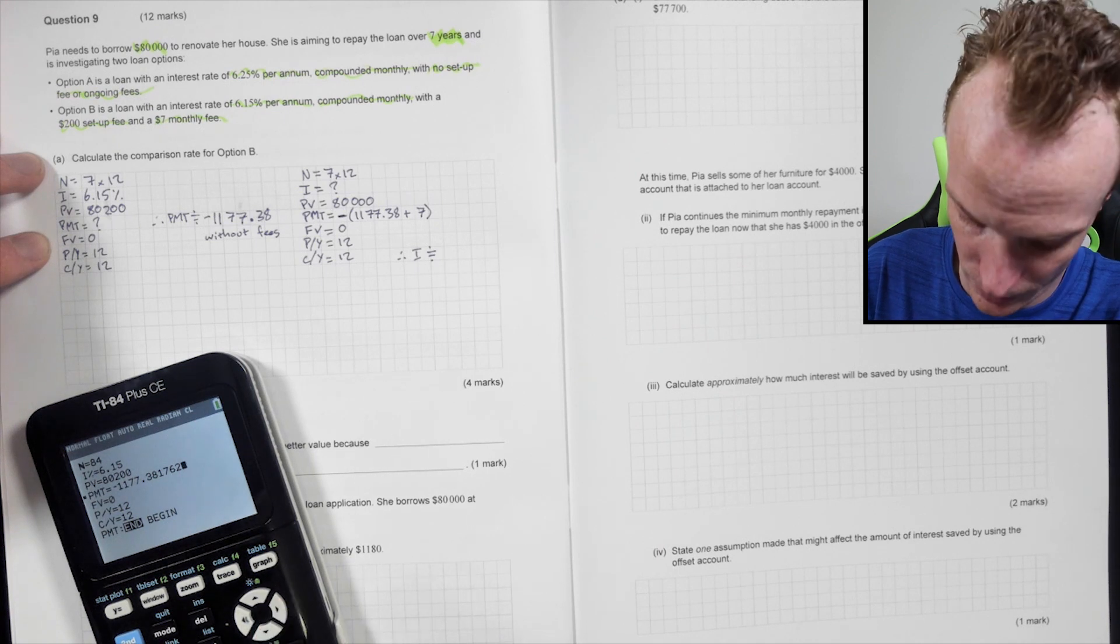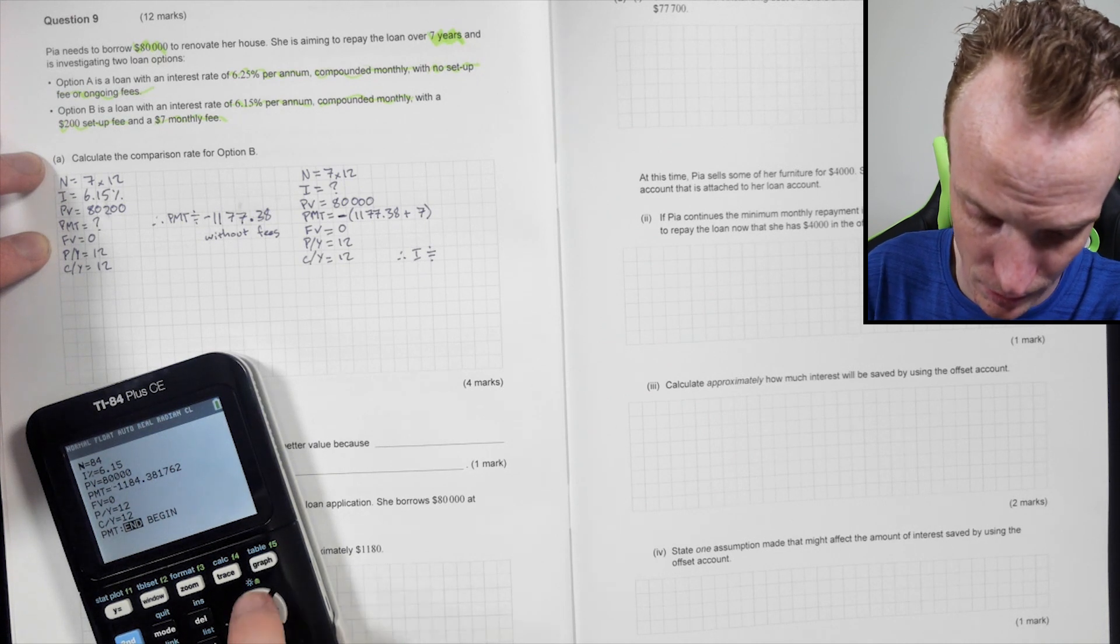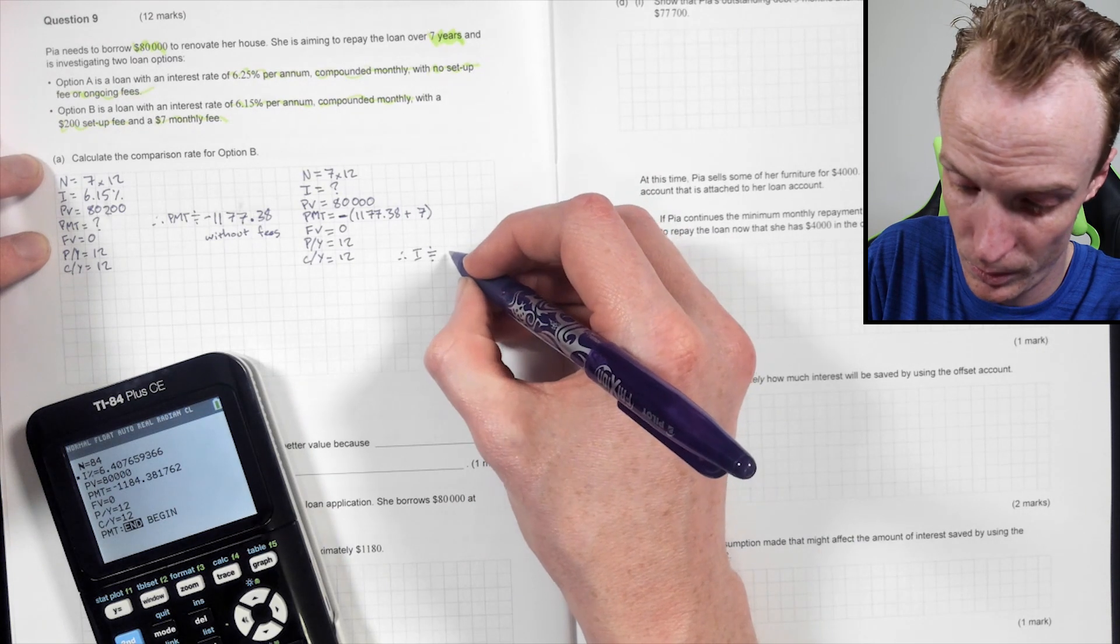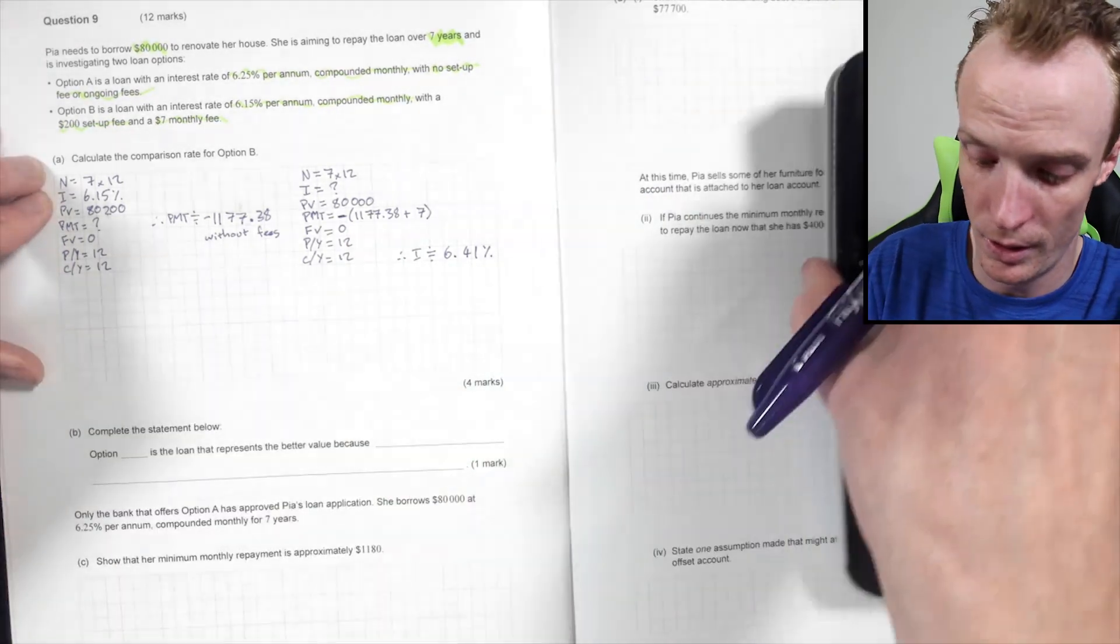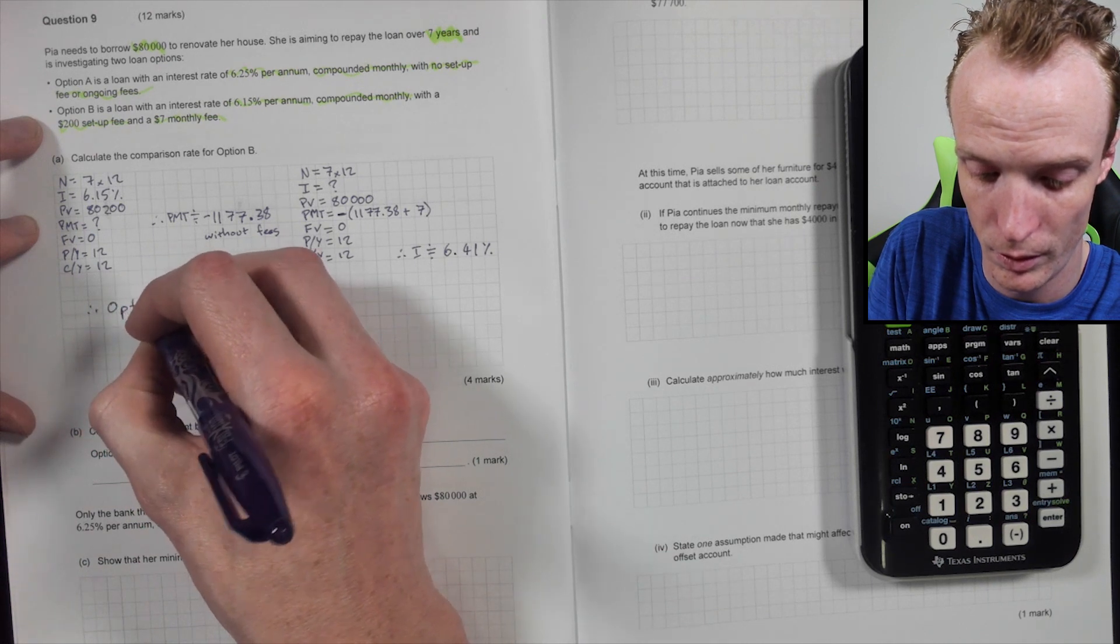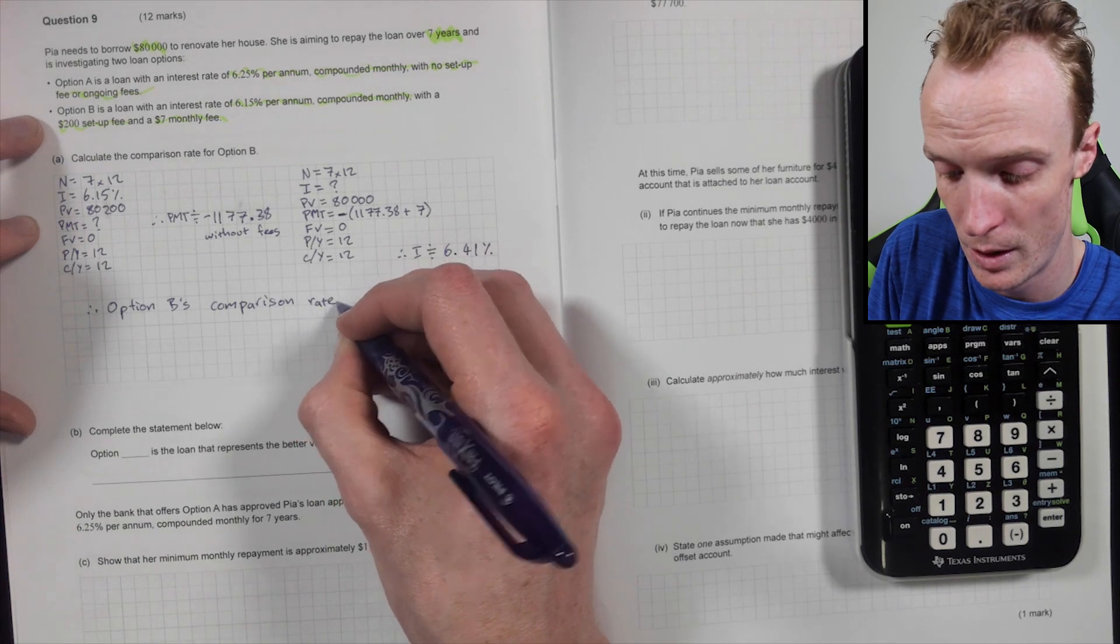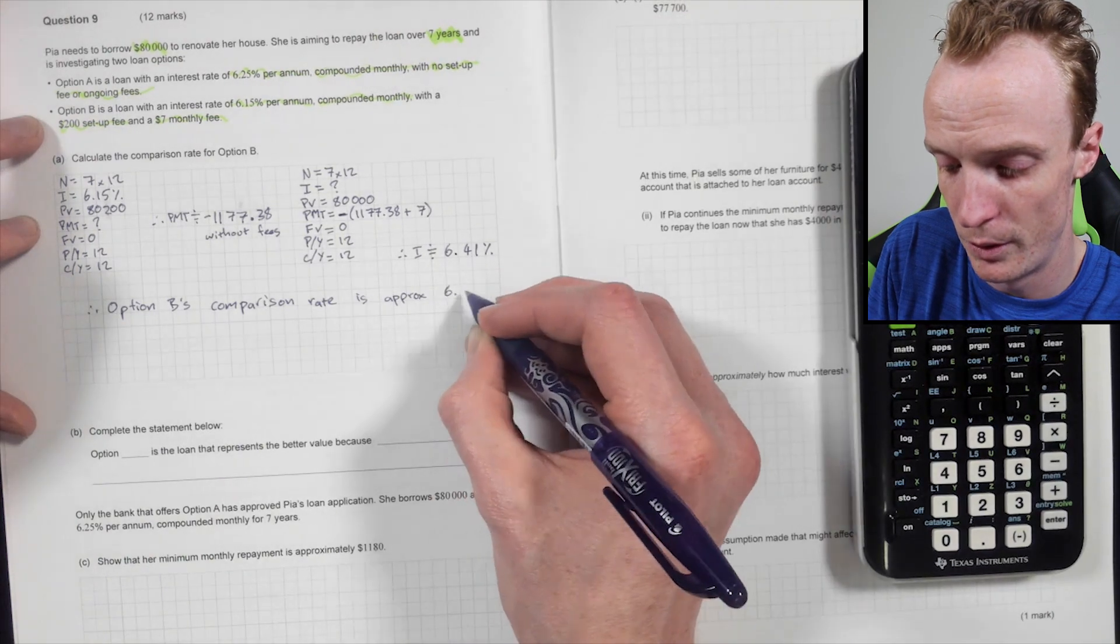So therefore the I is going to be approximately, I want to, I'm just going to do it this way for this. Subtract my seven under there. Make this start. Everything else is right. Yup. And you can see here that that's going to be approximately 6.41 percent. So therefore, Option B's comparison rate is approximately 6.41 percent.